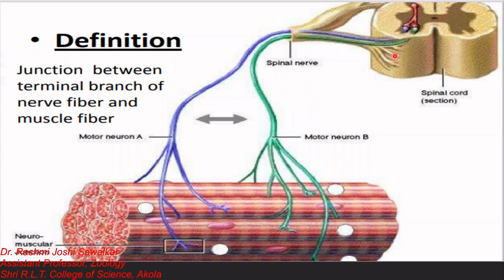Here we can see the spinal cord and spinal nerves, with motor neuron A and motor neuron B. These motor neurons get connected or inserted into the muscle layer. The highlighted part shows the motor neuron entering or getting inserted into the muscular layer. This junction of the motor neuron and muscular cell or muscular layer is called the neuromuscular junction — the place where transmission of impulse takes place.